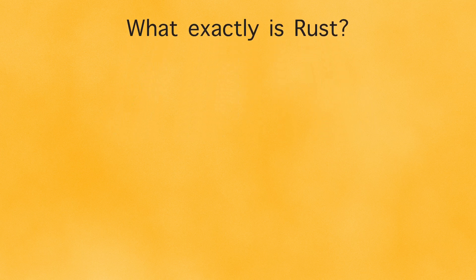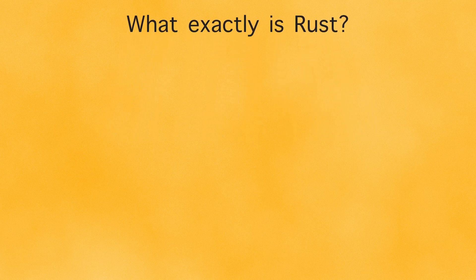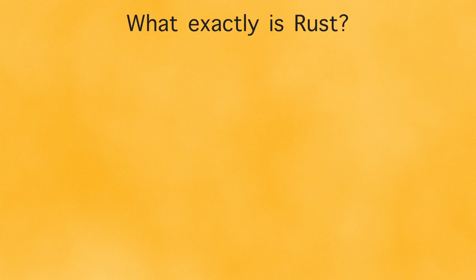So what exactly is Rust? Simply put, Rust is a systems programming language focused on three things: safety, speed, and concurrency.